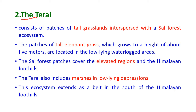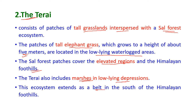The second type is the Taray. The Taray consists of patches of tall grasslands interspersed with sal forest ecosystems. Patches of tall elephant grass, which grows to a height of about 5 meters, are located in low-lying waterlogged areas, while sal forest patches cover the elevated regions under the Himalayan foothills. The Taray also includes marshes in low-lying depressions and extends as a belt south of the Himalayan foothills.